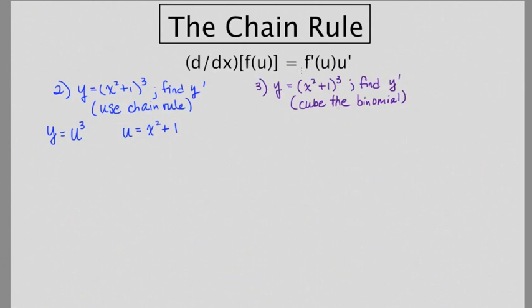Now, according to the formula, to find the derivative of a function in u, it's going to be the derivative of that function, which would be y prime is equal to 3u squared, but then we have to multiply that by the derivative of the inner function u. So u prime in this case would be 2x.